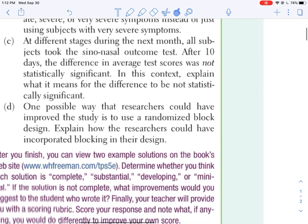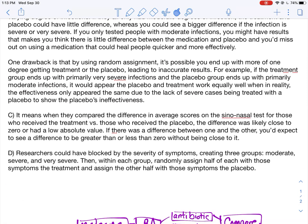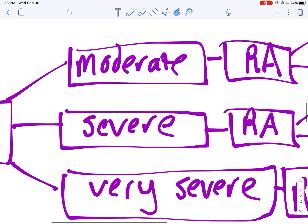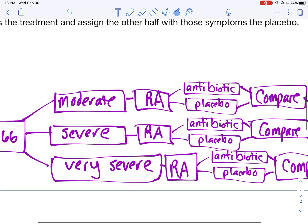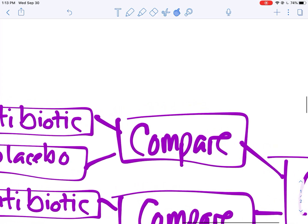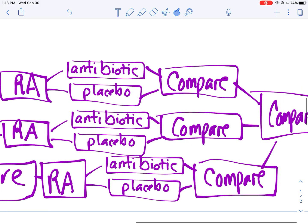The last question here, and you probably noticed I did a little block design down below, one possible way the researchers could have improved the study is to use a randomized block design. Explain how researchers could have incorporated blocking into their design. So I did a brief explanation. I did an illustration to help you guys. So I said researchers could have blocked by the severity of symptoms, creating three groups: moderate, severe, and very severe. Then within each group, randomly assigned half of each with those symptoms to the treatment and the other half with those symptoms the placebo. I drew it out down here, so I started out with 166 and I split them up based on their symptoms, moderate, severe, and very severe. Then within those groups, I took like, I took the moderates right, I randomly assigned half of them the antibiotic, half of them the placebo, then I compared their results.